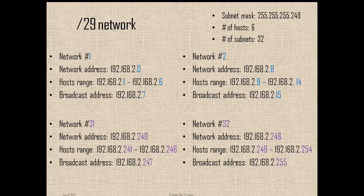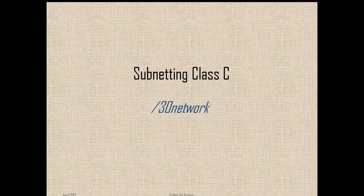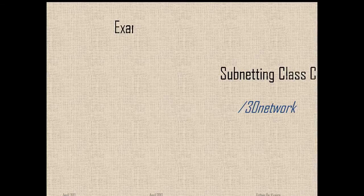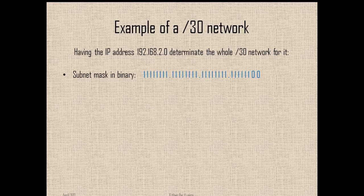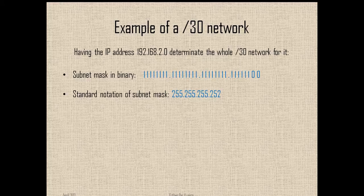And again, if you want to see the full example, please check our PDF file of the video. And for last, the slash 30 network — we are going to check the same example. So we're going to find first our binary mask. This is a mask with 30 bits activated on the network portion and 2 remaining bits for the host portion. Then we find the subnet mask in decimal: 255.255.255.252. And then the range, that's 4.